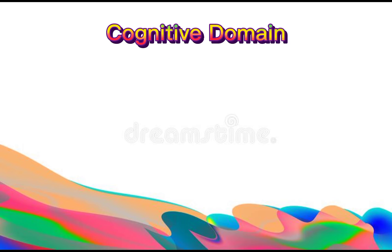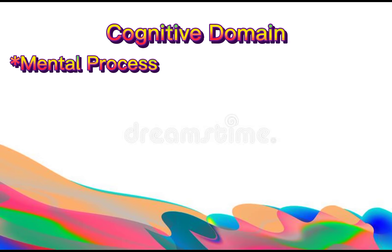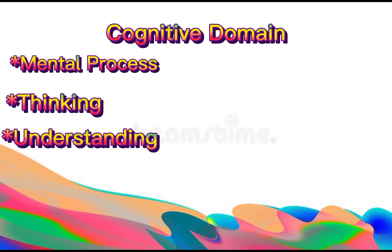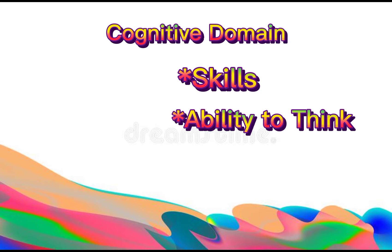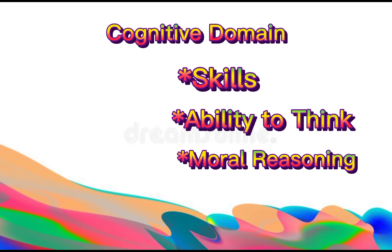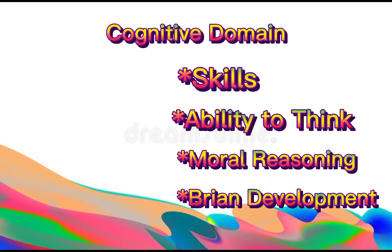Cognitive Domain: The cognitive domain includes mental processes such as thinking, learning, and understanding. This topic also gives emphasis on how humans develop their skills — the ability to think, moral reasoning, and brain development.